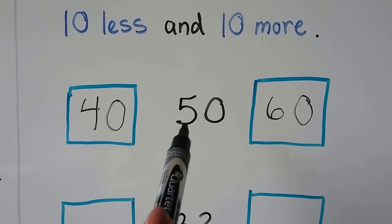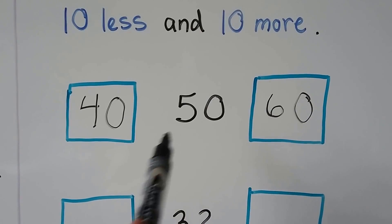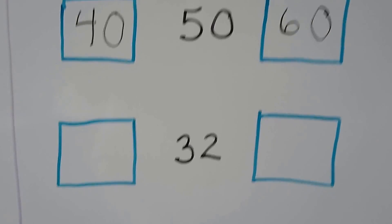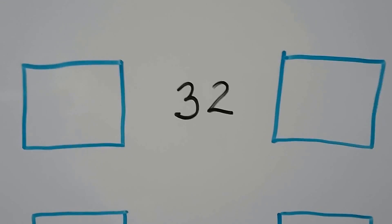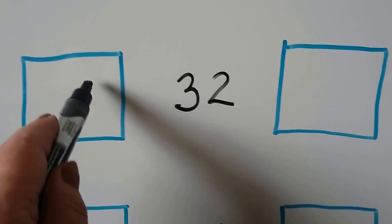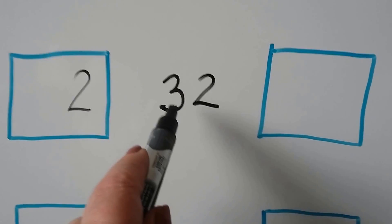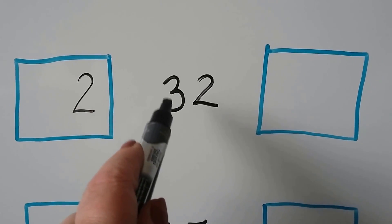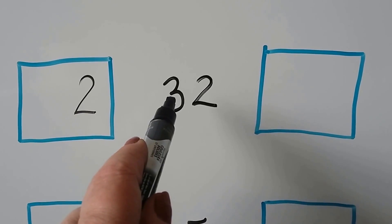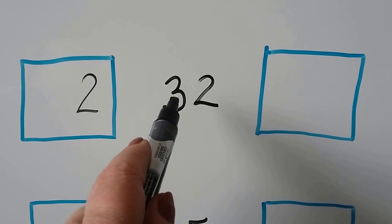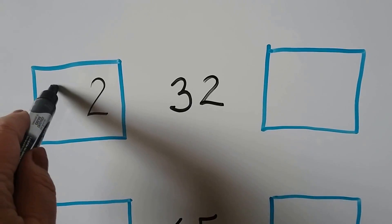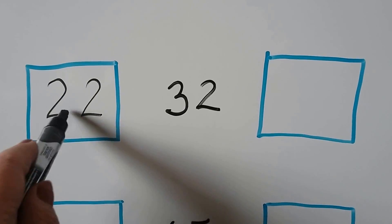We can look at the tens place and just add one or take away one. Let's try 32. The ones place is going to stay the same and this will go down by one number — we can count back 3 to 2, so it would be 22.